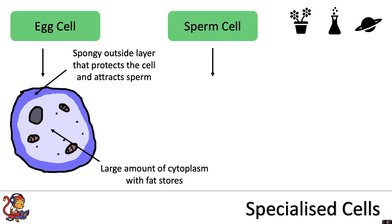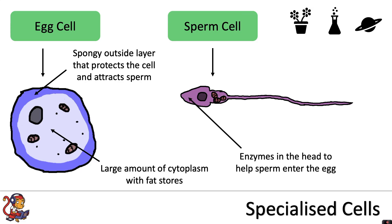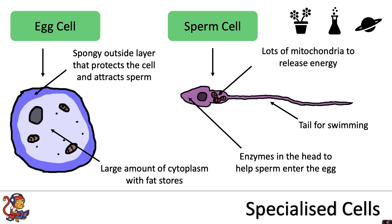Then we'll look at the sperm cell. This has enzymes in the head to help the sperm enter the egg. It has lots of mitochondria to release energy for movement, and it also has a tail for swimming.